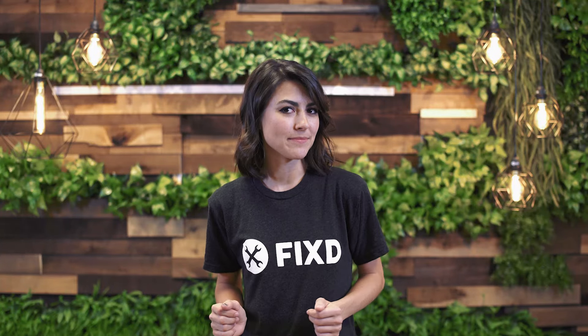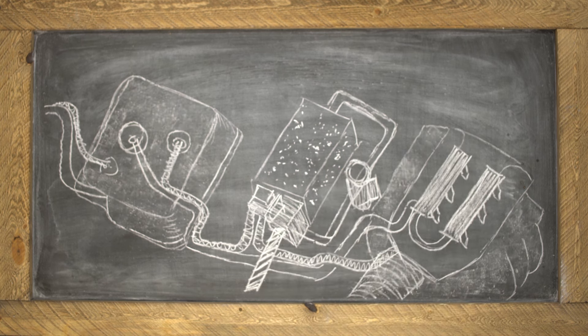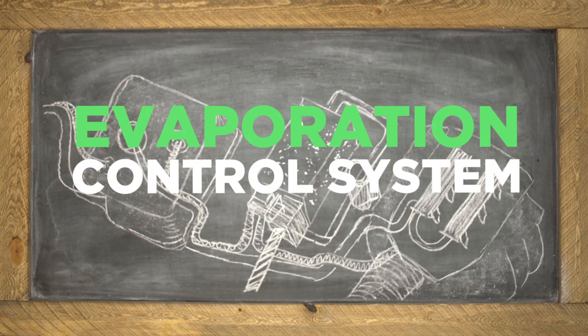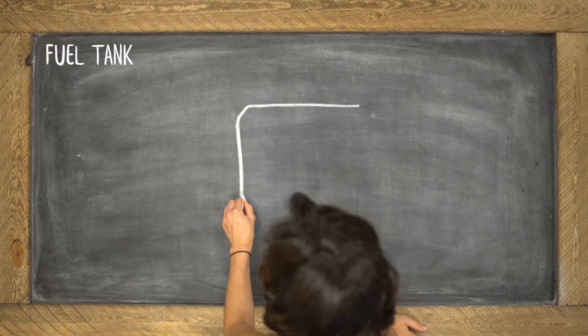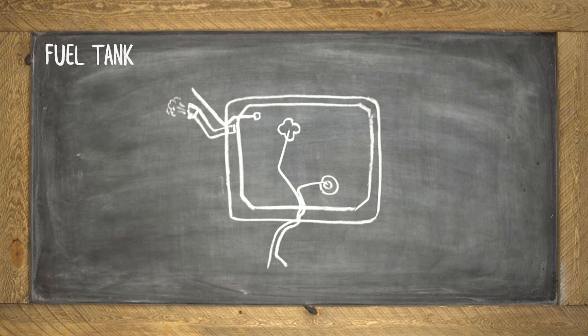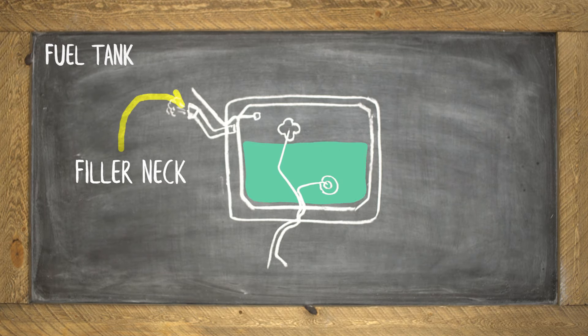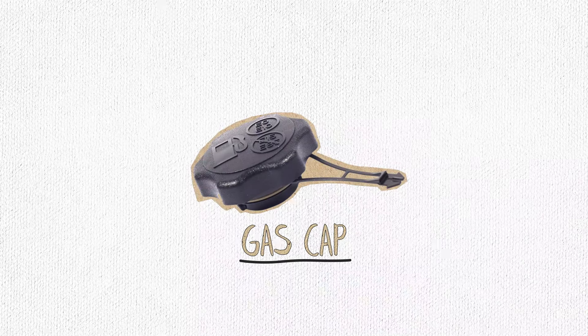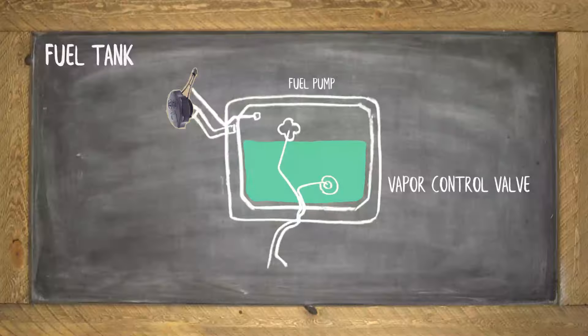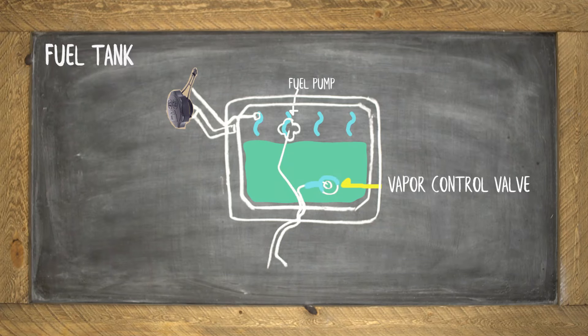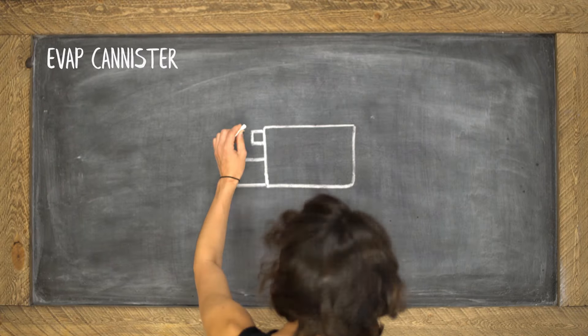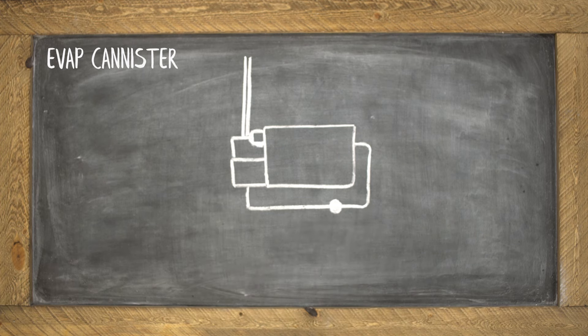So what exactly is the EVAP system? Let's draw it out. The EVAP system specifically deals with the vapors of the fuel system. The gasoline has to enter the fuel tank through the filler neck. This is sealed tightly, or should be, with the gas cap. Once in the fuel tank, the vapors are regulated by the vapor control valve.